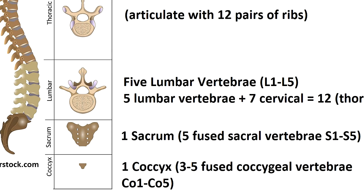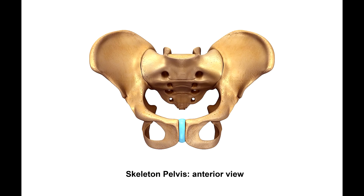Just below the lumbar vertebrae you have the one sacrum bone, which consists of five fused sacral vertebrae labeled S1 through S5. This triangular bone articulates with the hip bones laterally and with the coccyx bone inferiorly to form the bony pelvis.